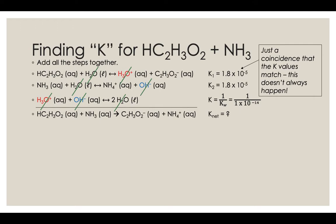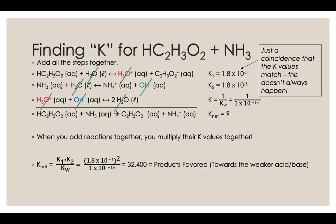So what if we wanted to figure out the K net for that reaction there underneath that bar with acetic acid and ammonia reacting to make acetate and ammonium? When we add reactions together, you'd multiply their K values together. And so when we do that, you'd get 32,400, a product's favored reaction, and it always goes towards the weaker acid and base.